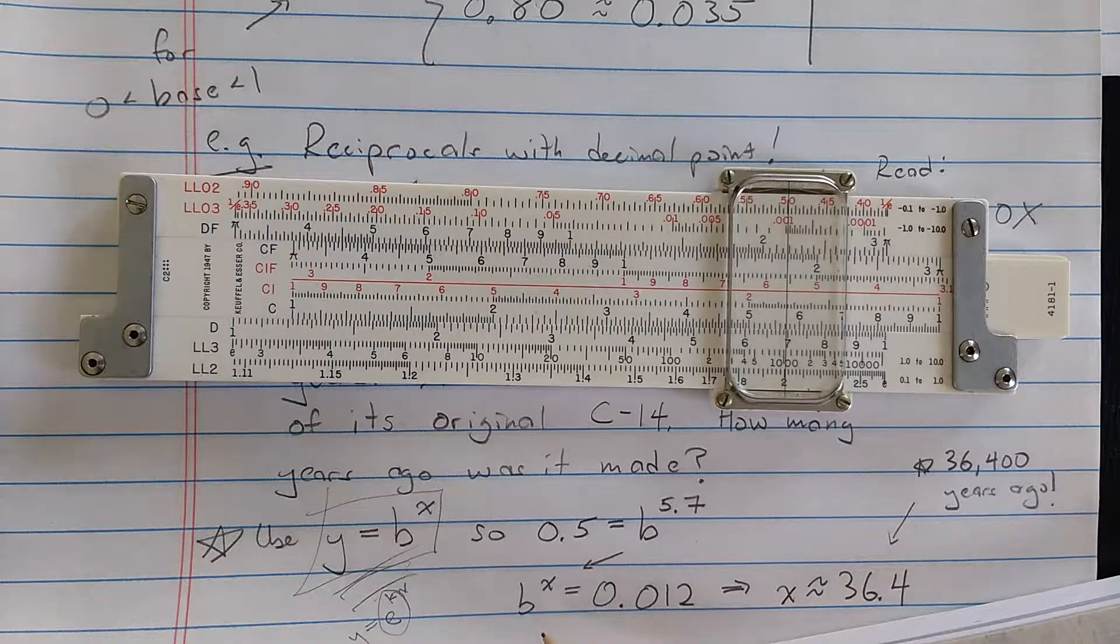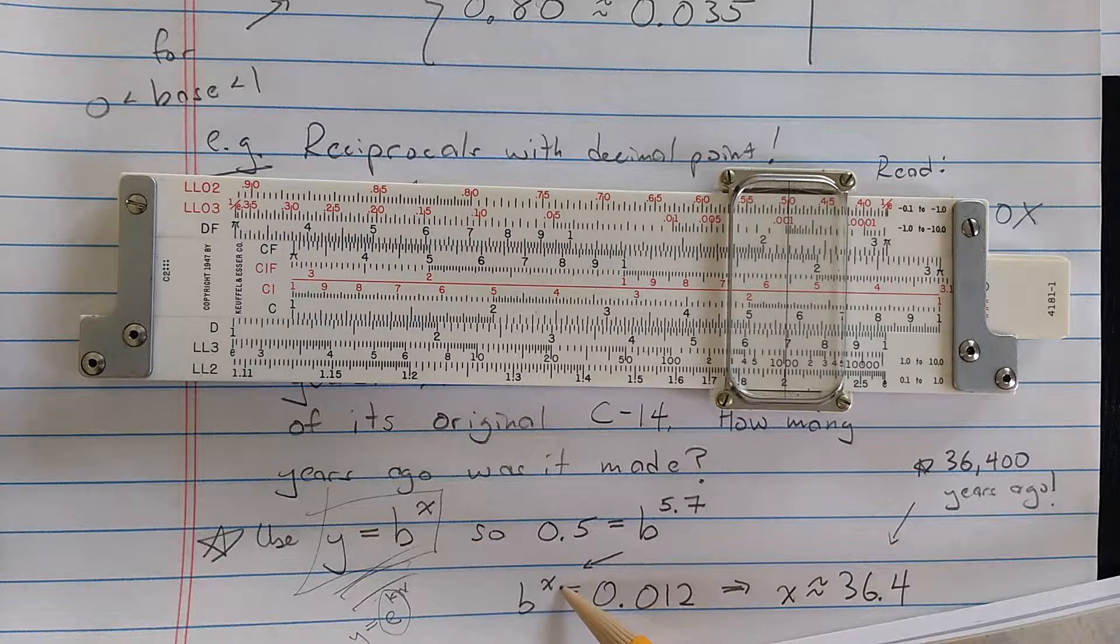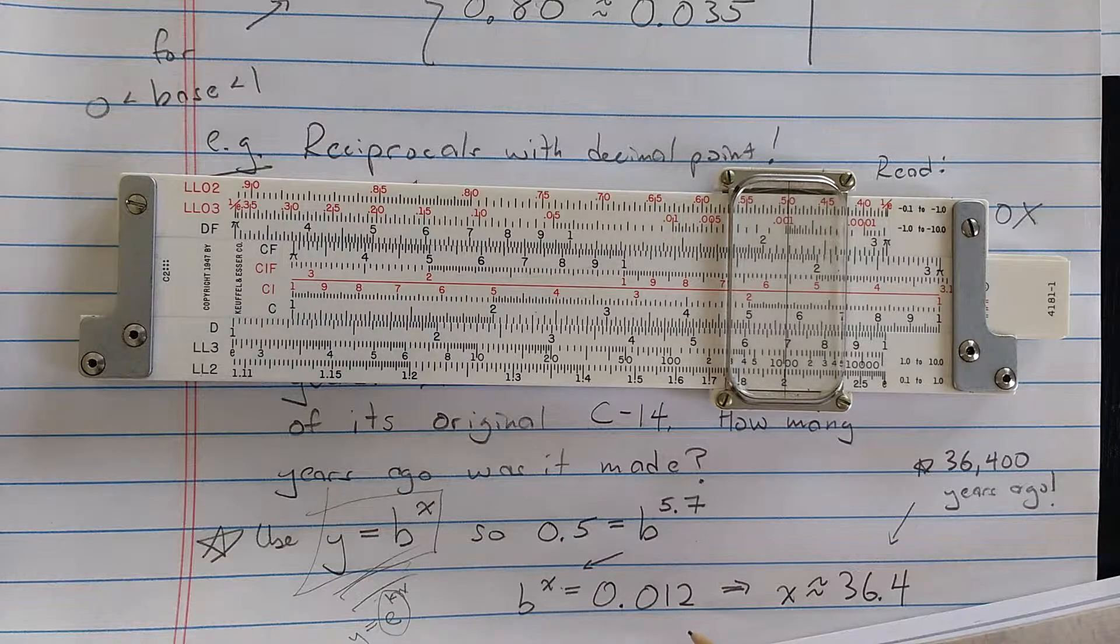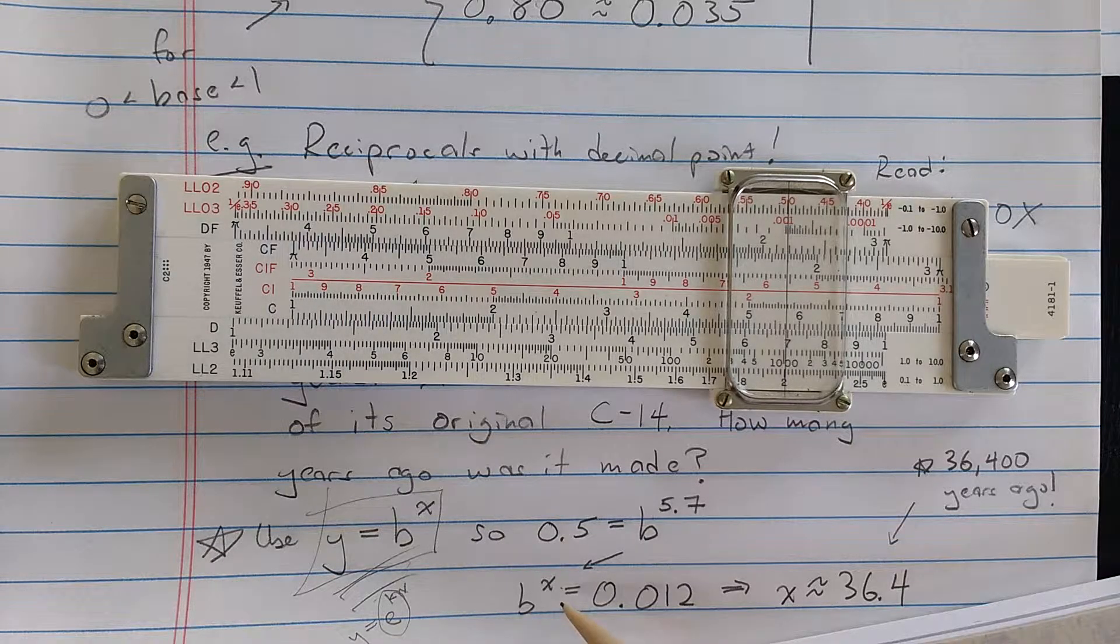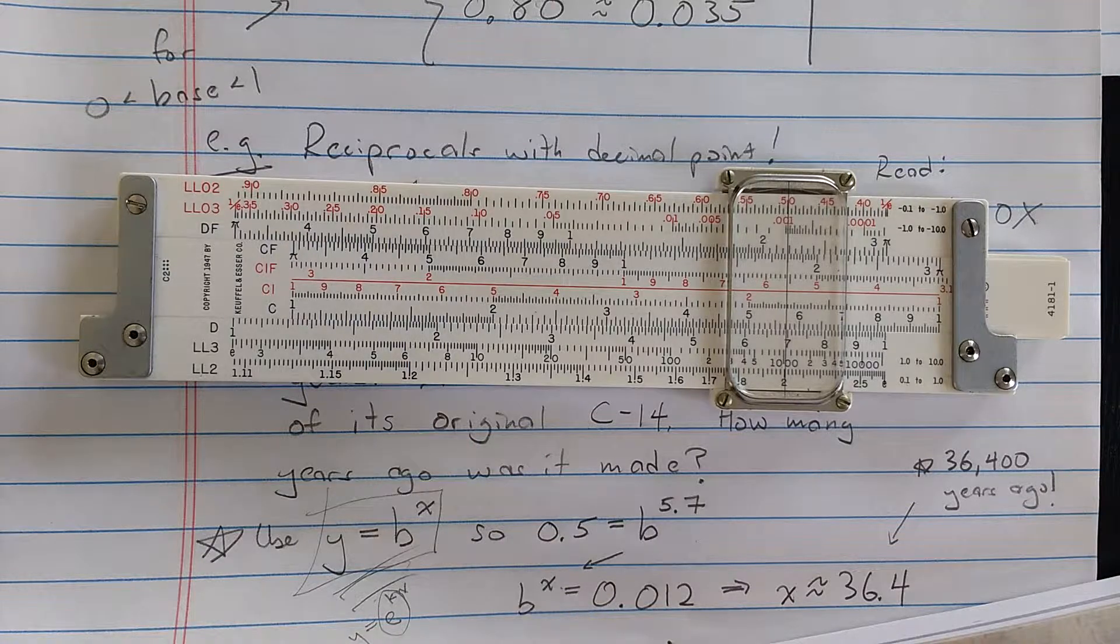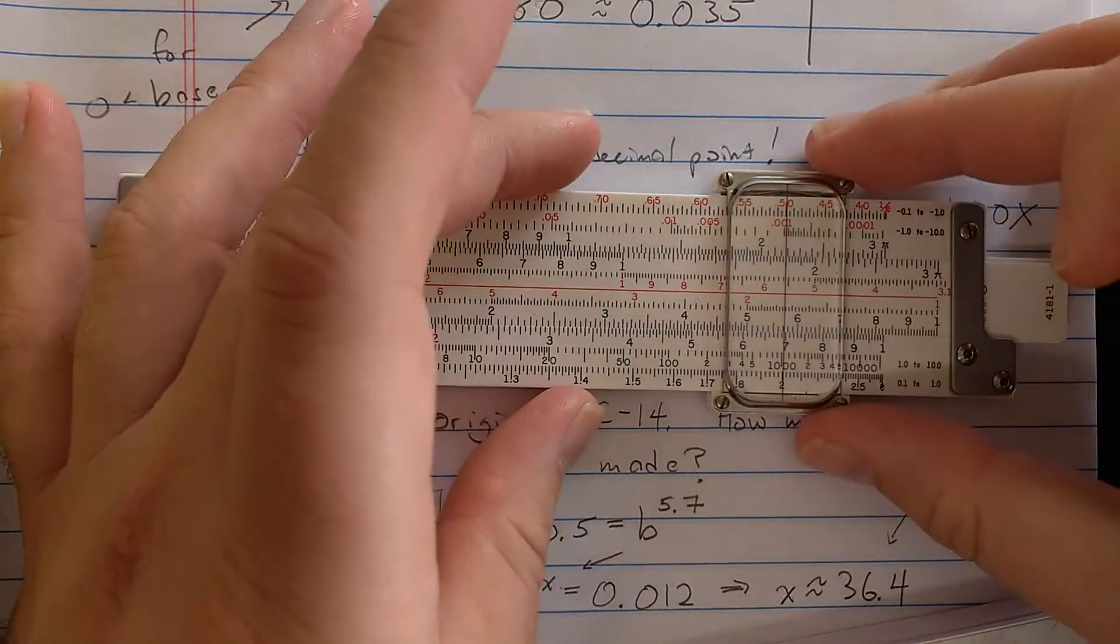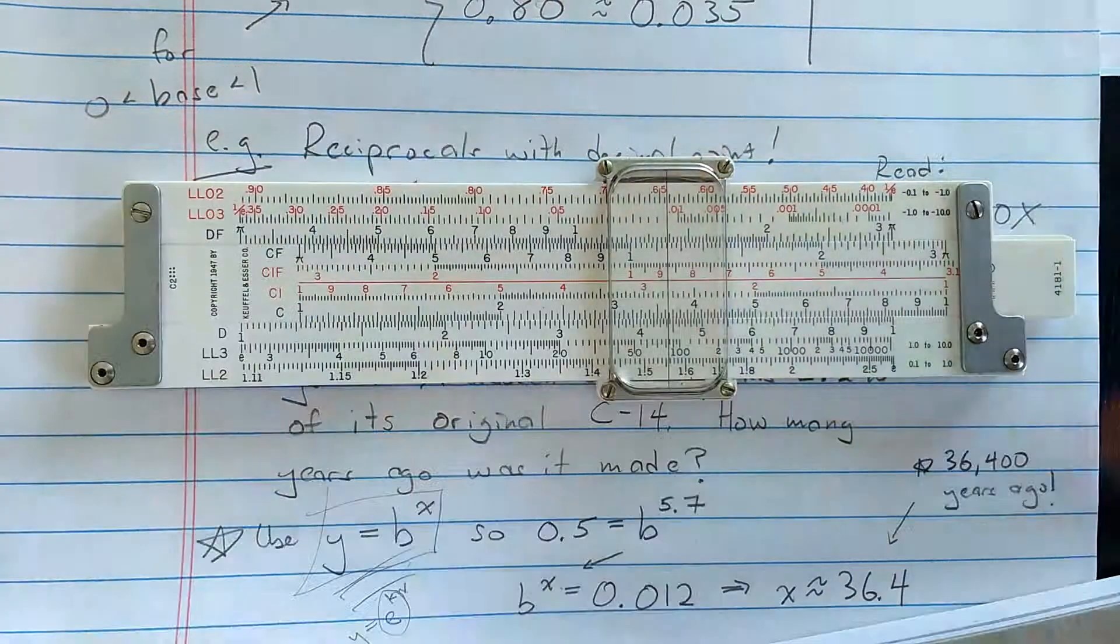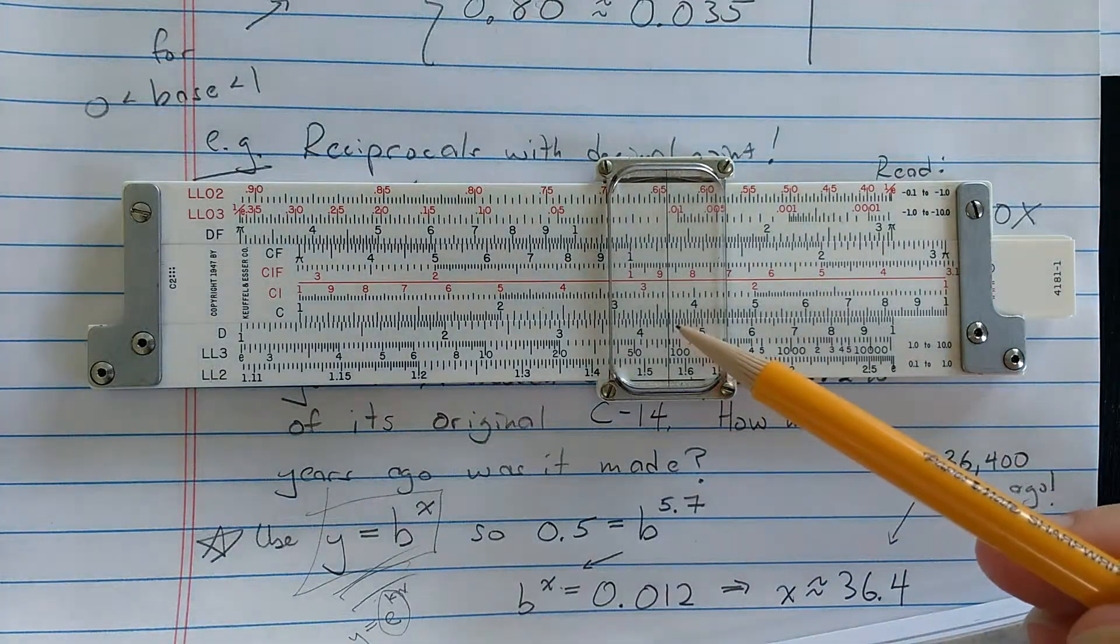So then I want to compute, well, what exponent should I put on that B to get 1.2%, or essentially computing a log is the second step. So what exponent should I put on that base to get 1.2%? That means all I need to do is come and find 1.2% here, and then read that exponent.